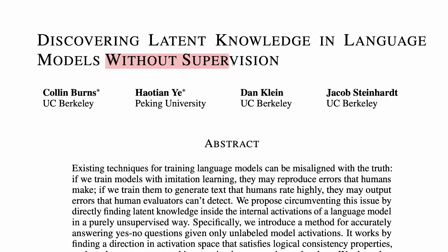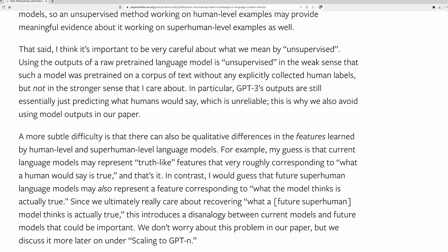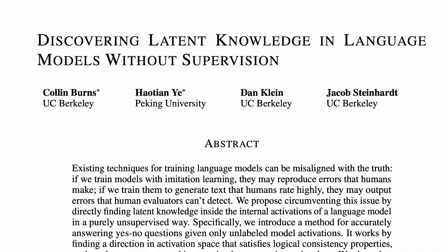A few closing comments from me. The unsupervised nature of this approach makes it a promising line of attack, so I very much hope there is further work that builds on this effort. It is worth noting that there are many subtleties about what exactly the model may learn to represent, and how this relates to beliefs. In a forum post, the lead author Colin Burns suggests that, my guess is that current language models may represent truth-like features that very roughly correspond to what a human would say is true, and that's it. In contrast, I would guess that future superhuman language models may also represent a feature corresponding to what the model thinks is actually true. In addition to what, how precisely AI models end up representing truth, whether it's some easily accessible feature that can be extracted with a linear probe, or some gnarlier thing distributed throughout the network, seems like a particularly valuable thing to investigate further. So I'd also be excited to see work probing that direction.